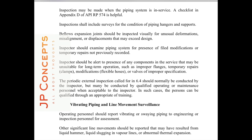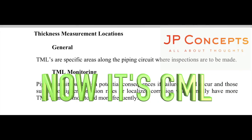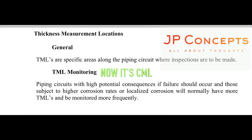In some cases, external inspection may be conducted by qualified operating or maintenance personnel with the approval of the inspector. For vibrating piping and line movement surveillance, operating personnel should report these types of vibration or line movement to inspection personnel for assessment. TML is an old term — now it is CML — and should be monitored during each and every inspection.